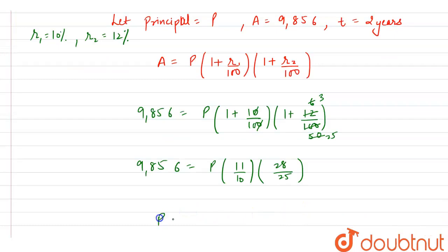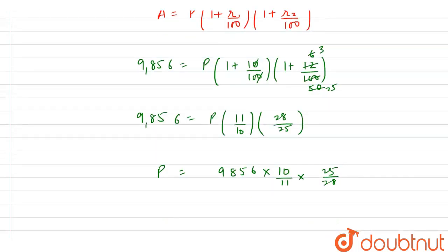So from here we can say that our P, that is principal amount, is equal to 9,856 into 10 by 11 into 25 by 28.